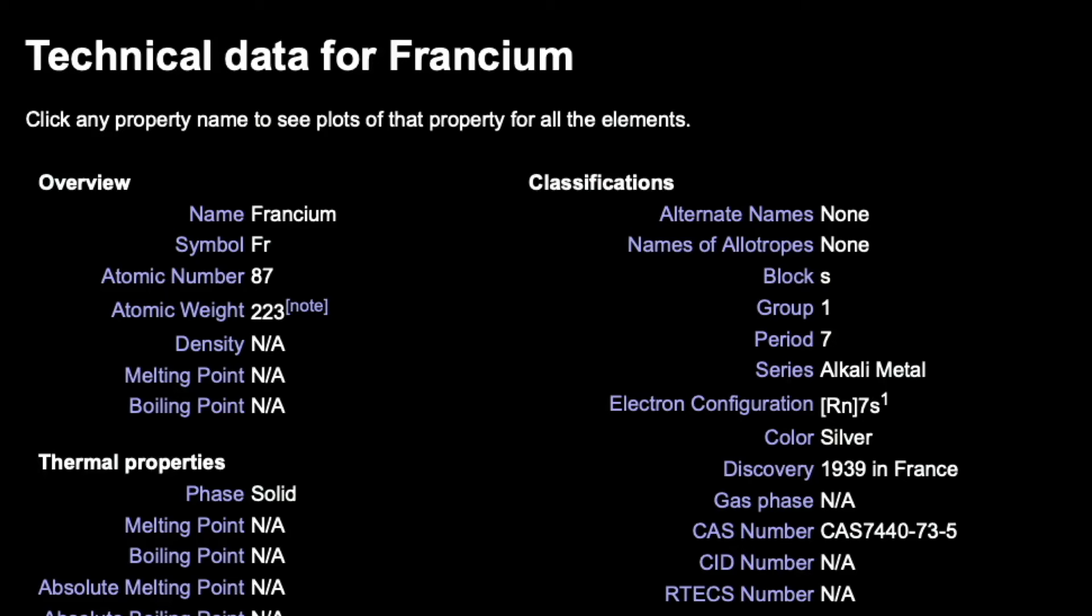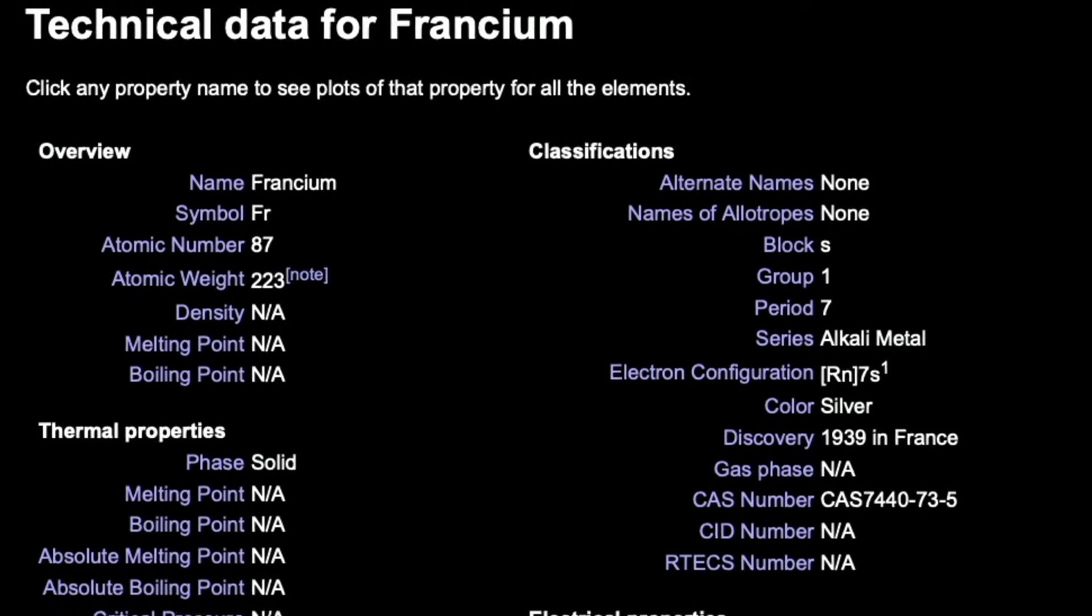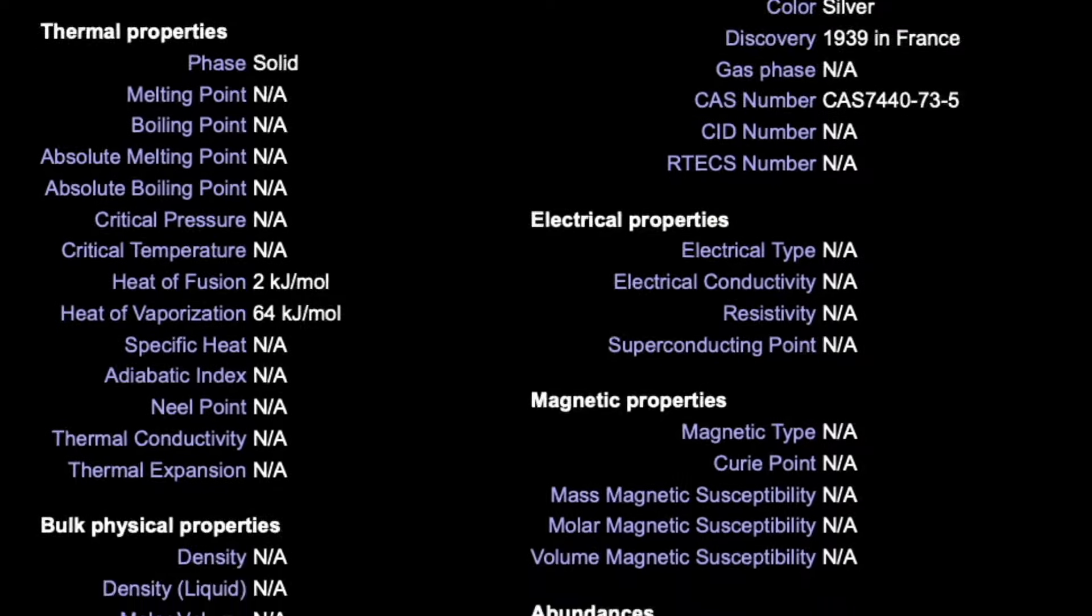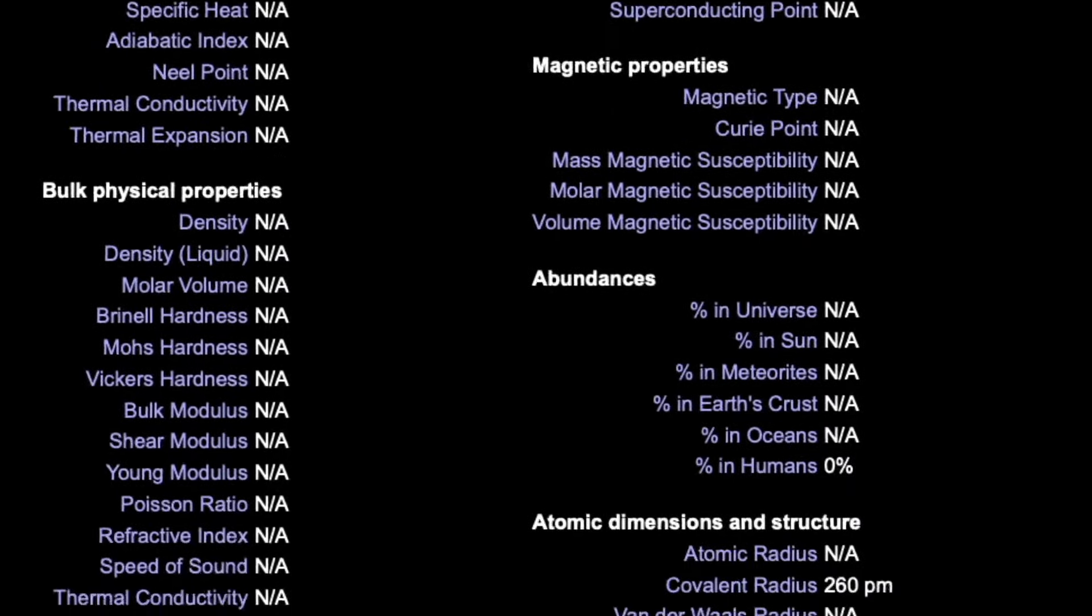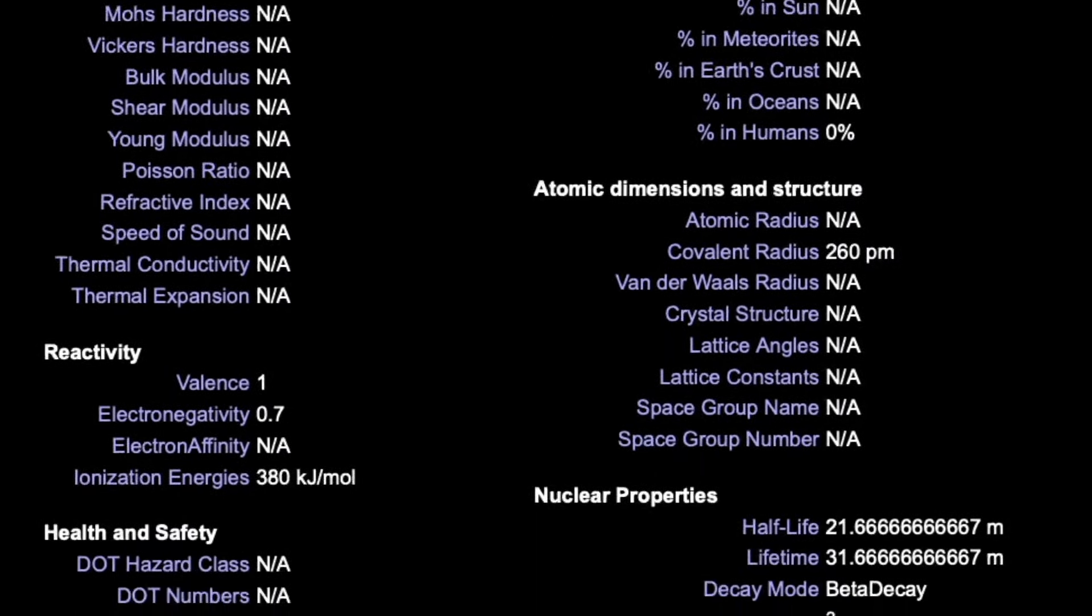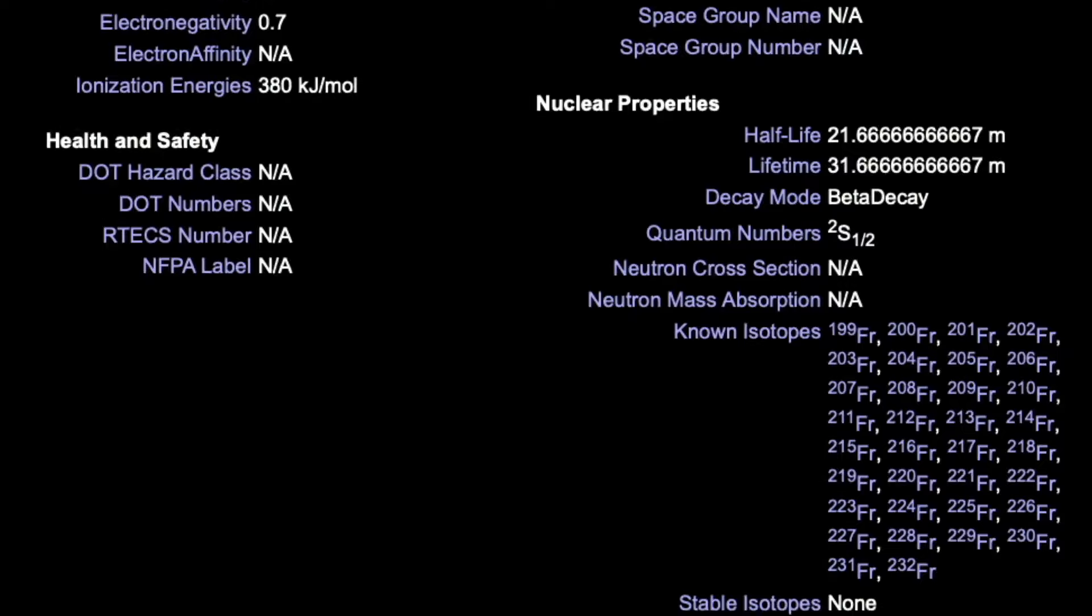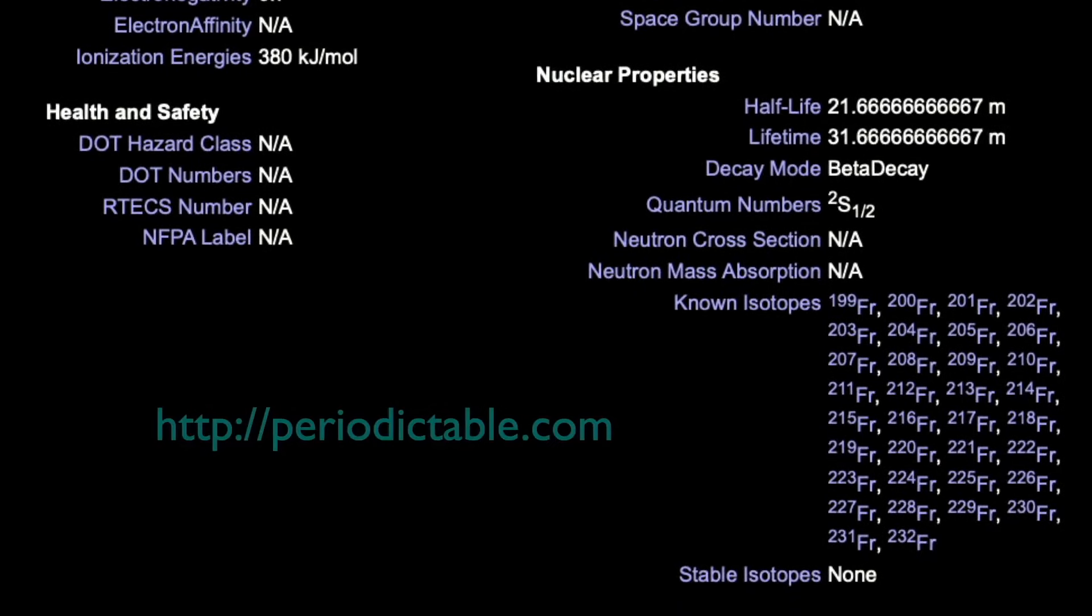If you look at tables of data about the element francium, you'll notice there are a lot of NAs, not available, simply because we don't know much about this element, mainly because no one has collected enough of it to do any experiments. This data is from Theodore Gray's site, Periodictable.com, one of my major sources of information.